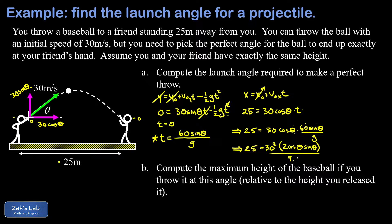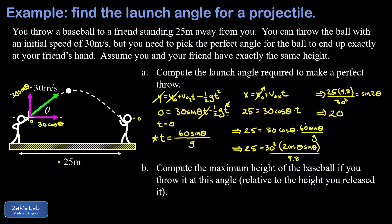With 2 cosine theta times sine theta written as sine of 2 theta, we isolate it on the right-hand side by multiplying by 9.8, giving: 25 times 9.8 divided by 30-squared equals sine of 2 theta. Since it's now a single trig function, we can invert it: we take the inverse sine of (25 times 9.8 divided by 900), which gives us 2 theta equals 15.8 degrees. Therefore, the launch angle theta is 7.90 degrees.